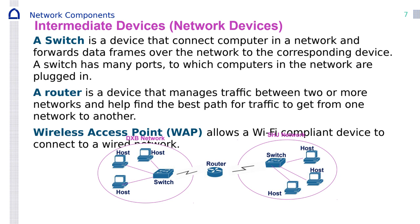A switch connects computers in a network and forwards data frames over the network to the corresponding device. The switch has many ports to which computers in the network are plugged in. For example, that brown one in the middle there has 24 ports.